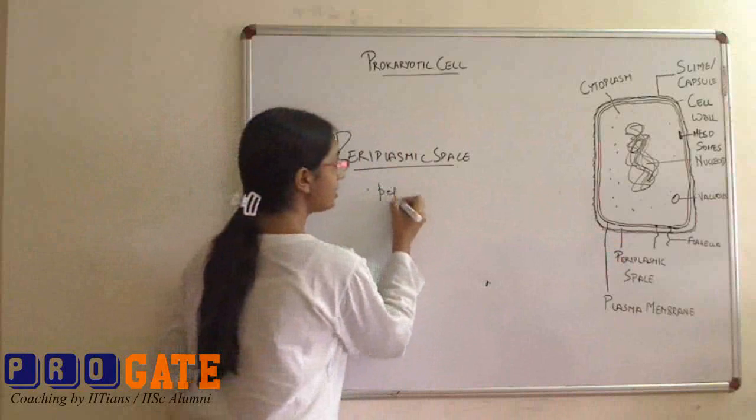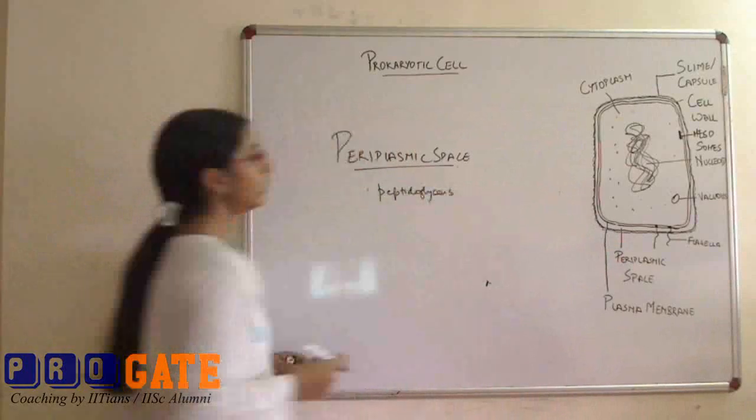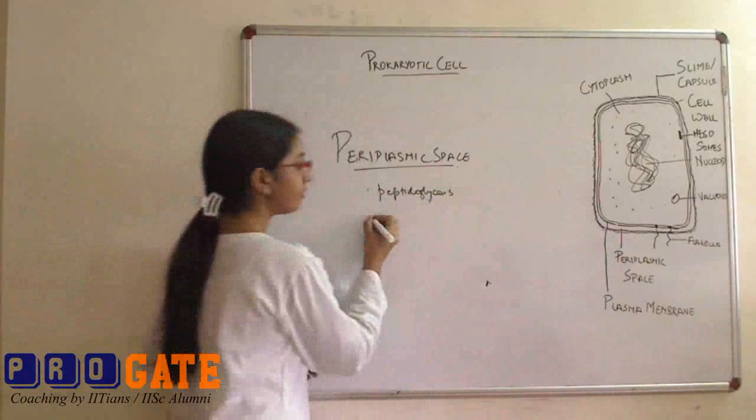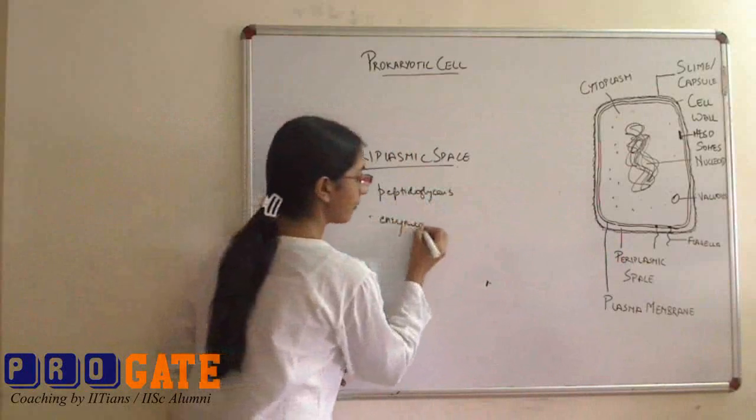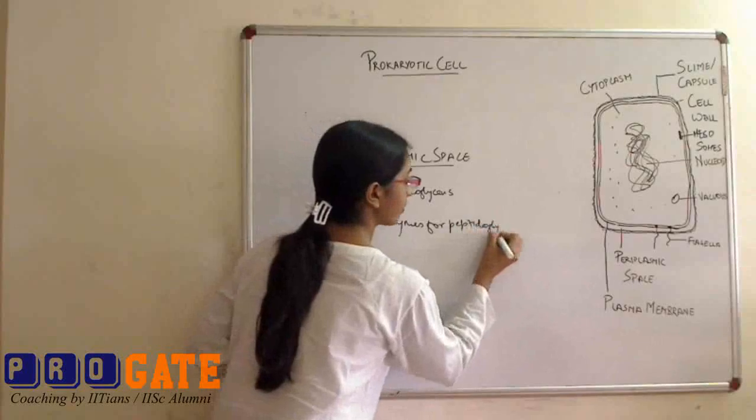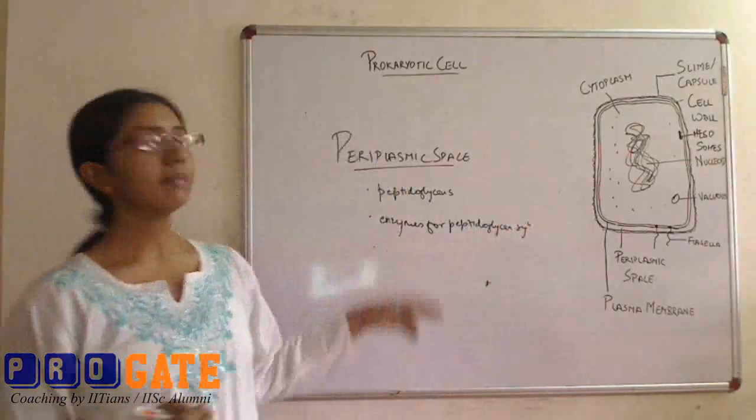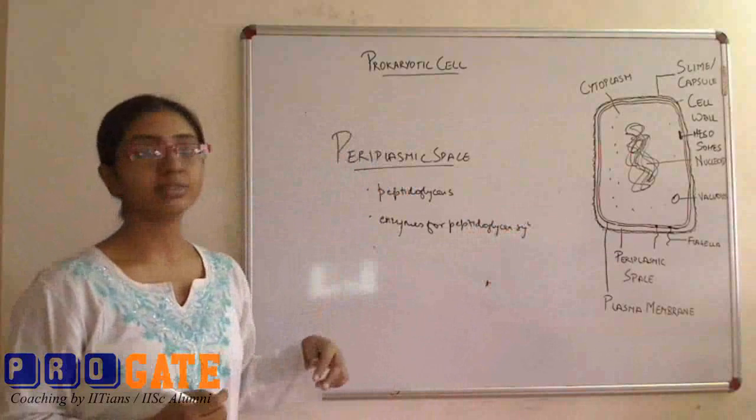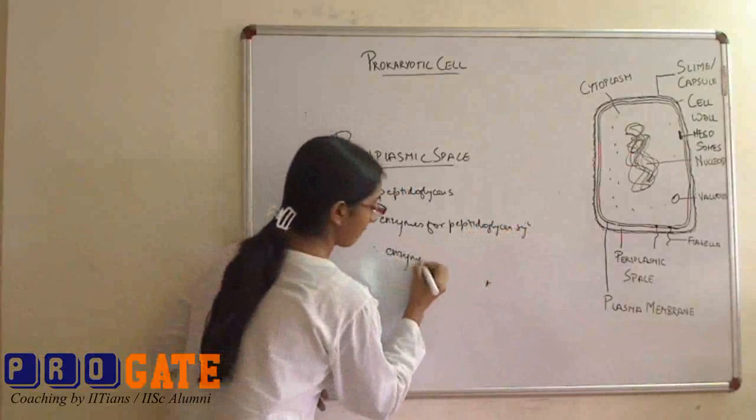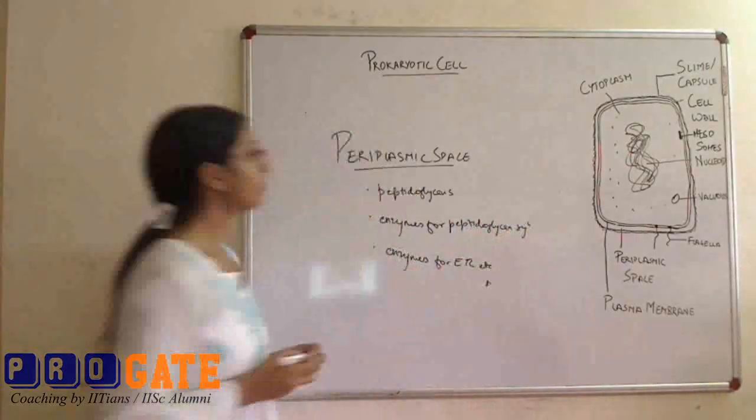Firstly, it contains peptidoglycans, which would actually eventually be forming the cell wall. Therefore, since it has peptidoglycans, it would definitely have enzymes for peptidoglycan synthesis. Also, it has been found that the periplasmic space contains certain enzymes for the ETC or respiratory system.